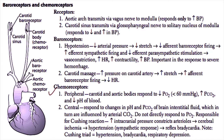And so Cushing's triad, which is seen in brain injury, is that of hypertension, bradycardia, and respiratory depression. The respiratory depression is usually caused by direct damage from whatever process is causing the cerebral ischemia.